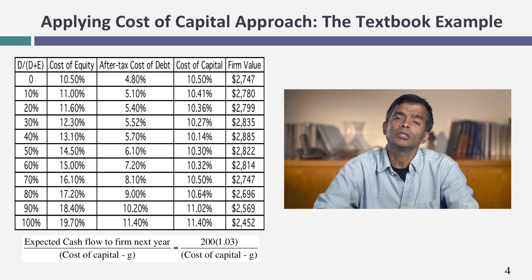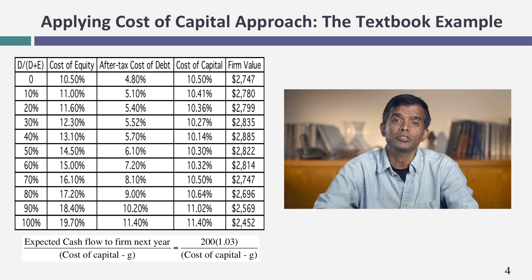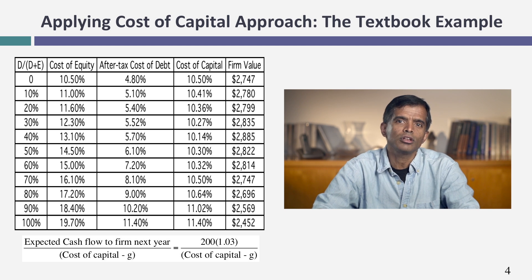Let me start with a simple abstract example to illustrate this process. Assume I gave you the cost of capital schedule for an entire company — meaning the cost of equity, cost of debt, and cost of capital at every debt ratio from 0 to 90%. I'll tell you a story with each number, but you're going to see that this storytelling can only take you so far. As the debt ratio goes up, the cost of equity will increase.